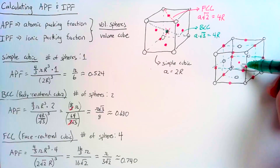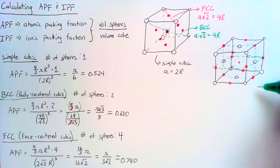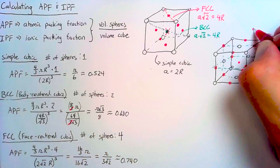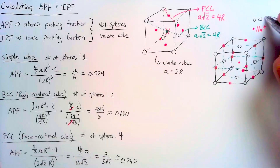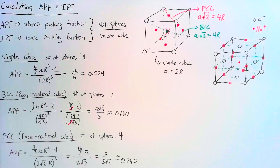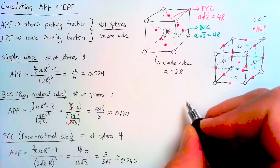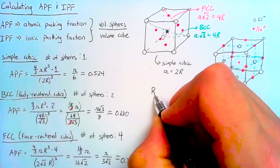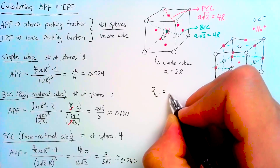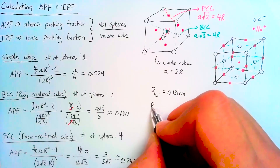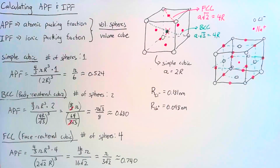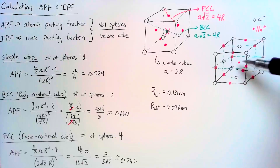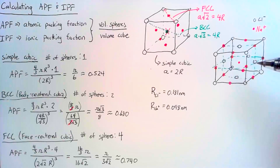The sodium atoms are on the edges and in the center, while the chlorine atoms are on the faces and the corners. To start the calculation, we need the radii of the two ions. The radius of a chlorine ion is 0.181 nanometers, and the radius of a sodium ion is 0.098 nanometers. The tricky part is that it's not immediately clear which direction will be the limiting factor for the size of our cube.